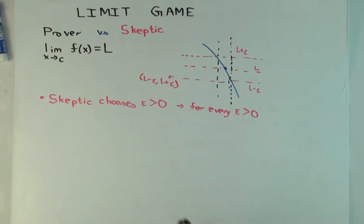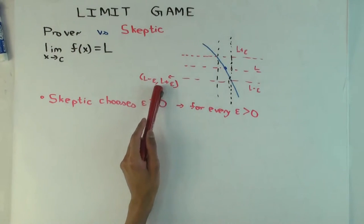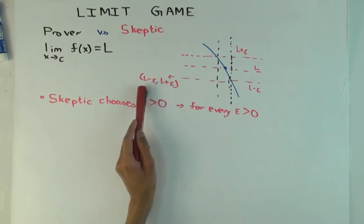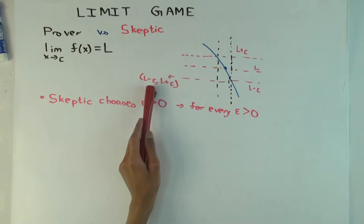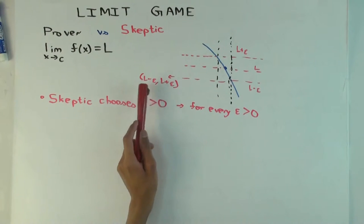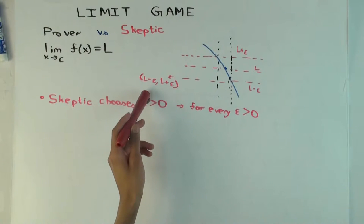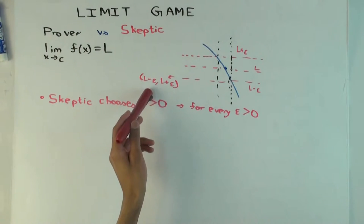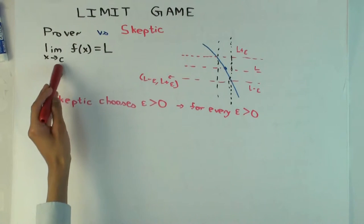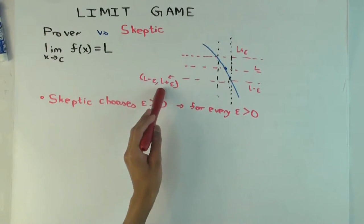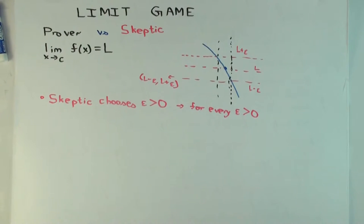The skeptic is effectively choosing the interval from l minus epsilon to l plus epsilon. What the skeptic is trying to challenge the prover into doing when picking this interval is trapping the function output within this interval when the input x is close to c. That's the challenge, and this will become clearer as we continue with the definition.